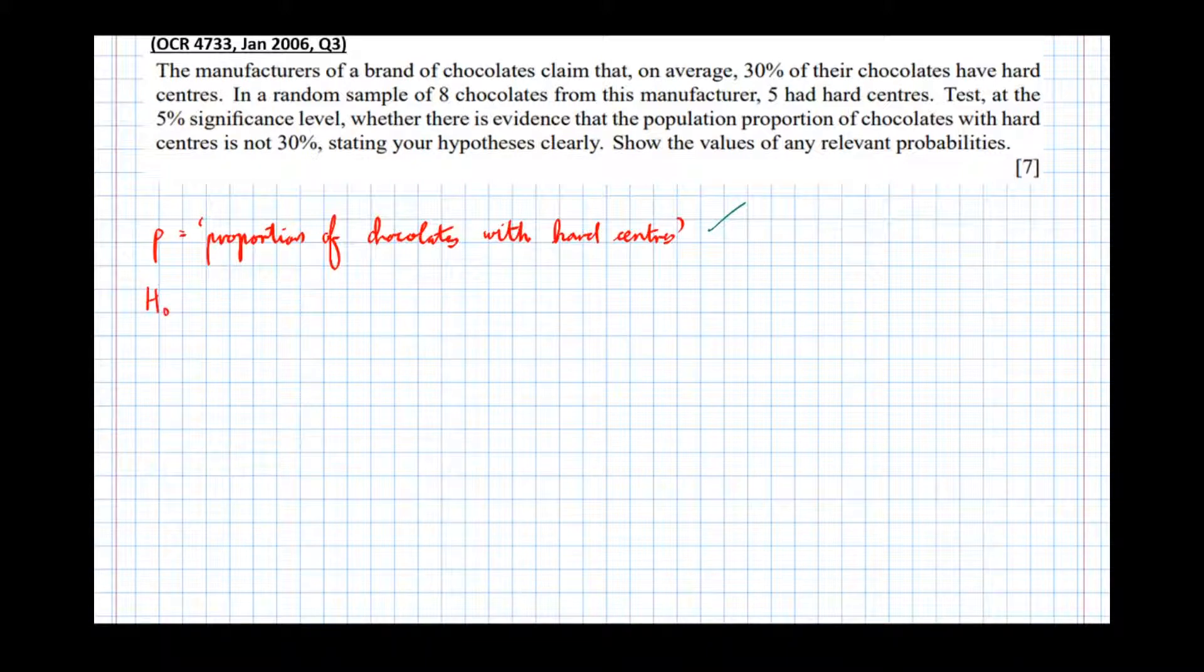So our null hypothesis—well, the claim is that 30% of the chocolates have hard centers, so p equals 0.3, and we're going to assume that's true. What we're going to try and do is find evidence to disprove this. So someone else has claimed that actually the proportion of chocolates with hard centers is not 30%. It doesn't say whether we're expecting the proportion to be bigger or smaller, so our alternative hypothesis has to be p is not equal to 0.3—not greater than, not less than, but not equal to. Each of those is usually worth a mark.